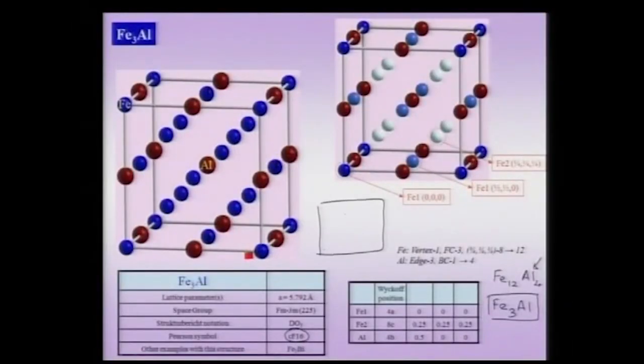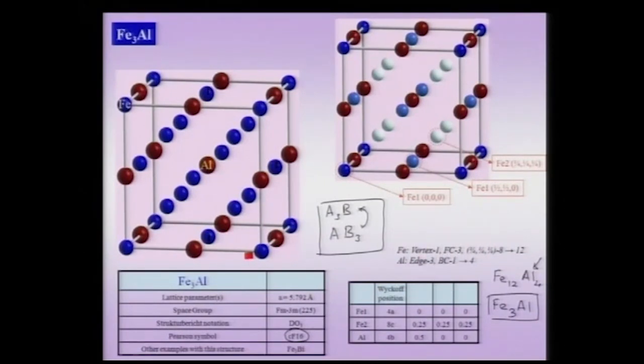Is the position of iron and aluminum interchangeable in these crystals, as in sodium chloride? Clearly not, because the stoichiometry is so different — if I did the interchanging, my stoichiometry would completely change. However, there could be other examples where an A3B structure is stabilized and it could also be possible that the same phase diagram shows an AB3, with the crystal structure obtained simply by interchanging positions. But not in this particular example of Fe3Al — if I change it I am obviously changing the stoichiometry.